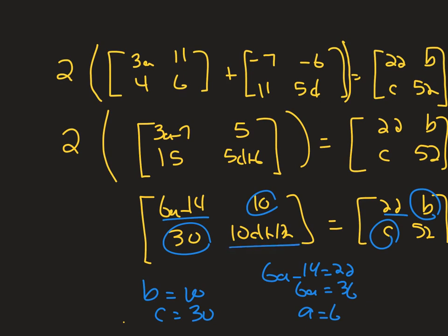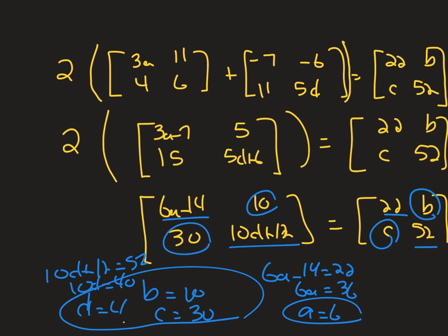And also down here, 10d plus 12 has to be 52. 10d plus 12 has to be 52, which means 10d is 40, which means d is 4. So that's all we're going to do when we solve these matrix equations. We're going to find the a, the b, the c, and the d, just by doing all the work that we know how to do already, and then setting two matrices equal to each other. Then each part of each matrix must be equal.